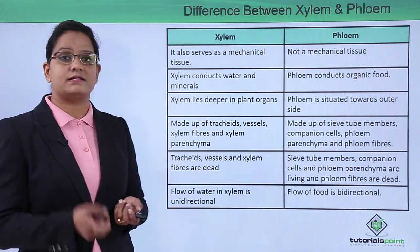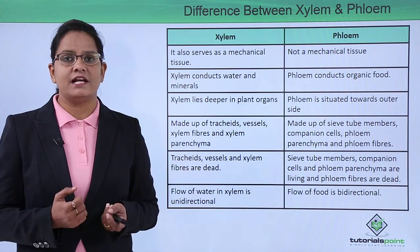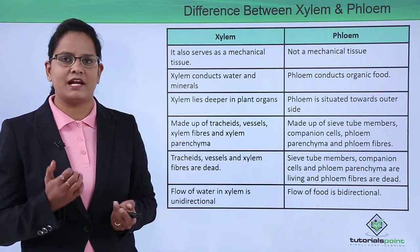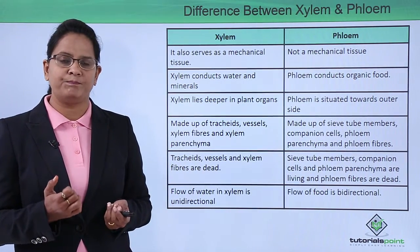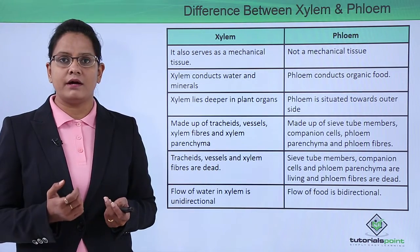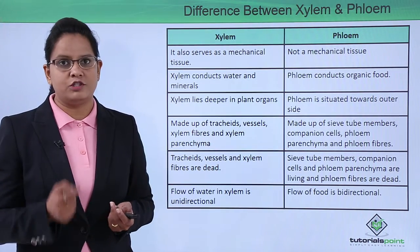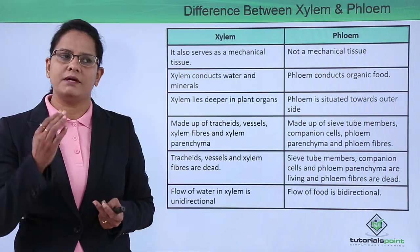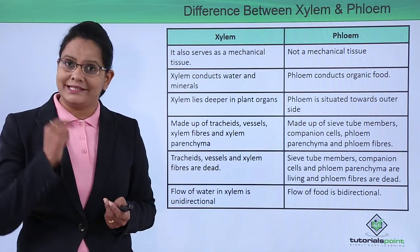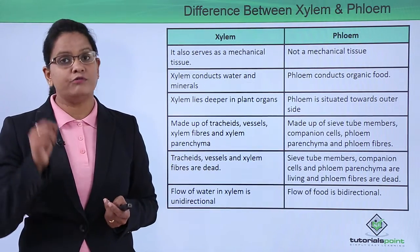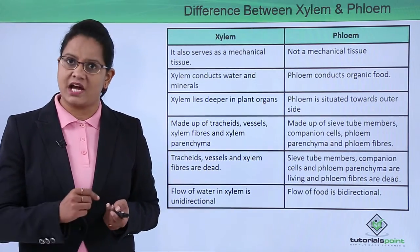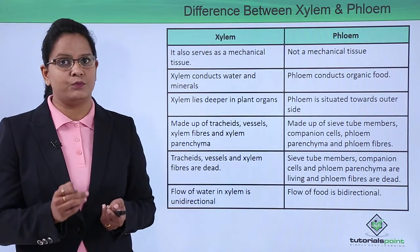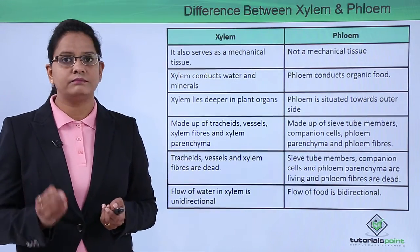The cells present in xylem are tracheids, vessels, xylem fibers, and xylem parenchyma. The cells present in phloem are sieve tubes, companion cells, phloem parenchyma, and phloem fibers. Three out of the four cell types in xylem are dead, so it is mostly a dead tissue.